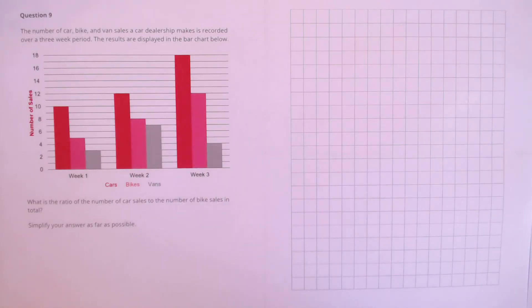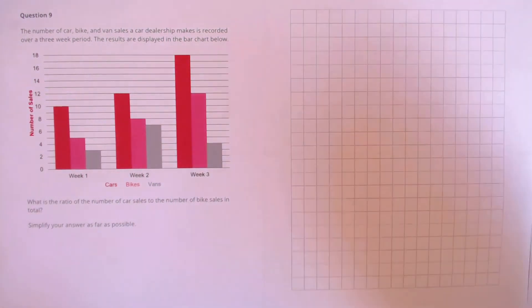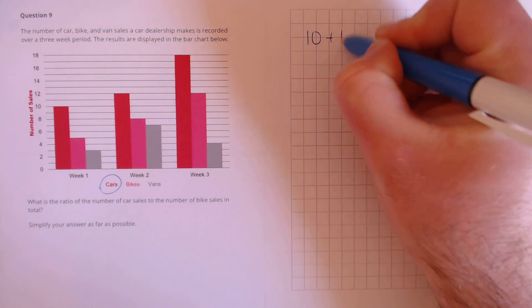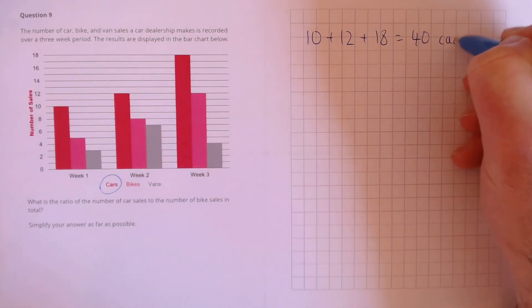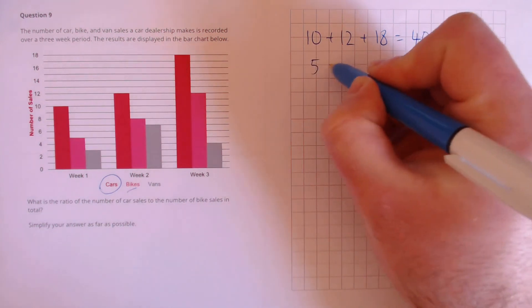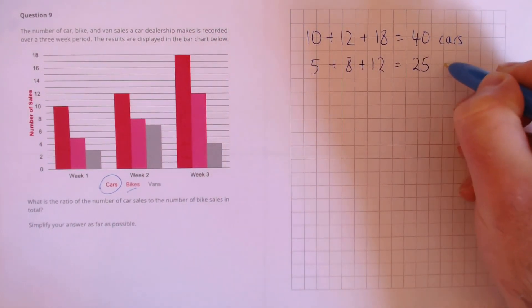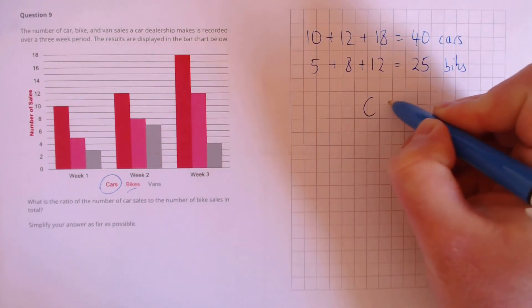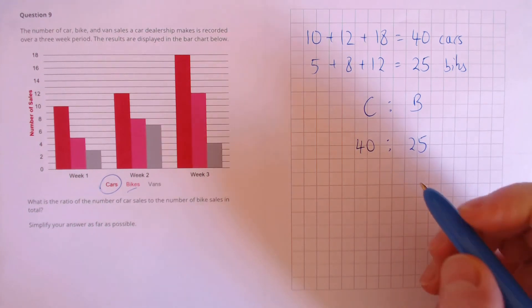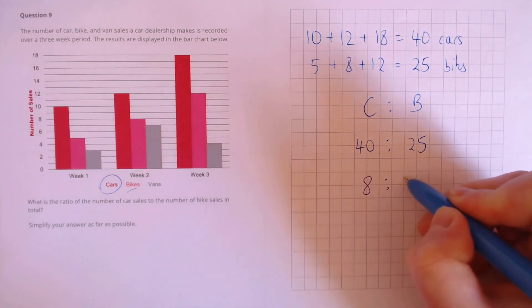Question 9. The number of car, bike, and van sales a car dealership makes is recorded over a 3-week period in the bar chart below. What is the ratio of the number of car sales to the number of bike sales in total? Total car sales: 10 plus 12 plus 18 equals 40. Total bike sales: 5 plus 8 plus 12 equals 25. The ratio of cars to bikes is 40 to 25. Both divide by 5, giving a final answer of 8 to 5.